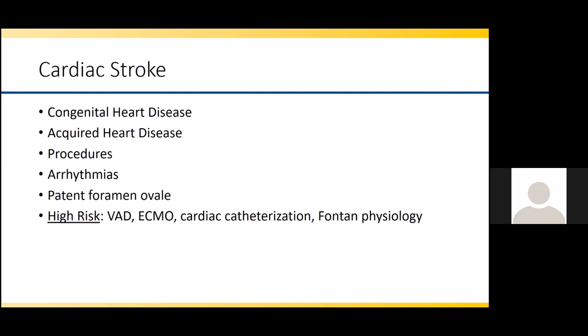Cardiac stroke is a very common cause of stroke in children and can be related to congenital or acquired heart disease. These children are at additional risk due to procedures and may have associated arrhythmias. Patent foramen ovale is a somewhat controversial cause but worth exploring in children with stroke. The highest risk patients for cardioembolic stroke include those on ventricular assist devices, those on ECMO, children undergoing cardiac catheterization, or those with Fontan physiology.